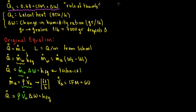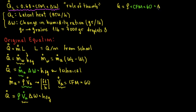So continuing with this equation: Q equals density times volume of air, which we replace with CFM times 60 — that's the conversion factor for one hour equals 60 minutes. Then we keep the changing humidity ratio times delta h_fg, which is the specific enthalpy, or latent heat.